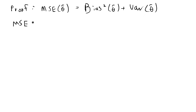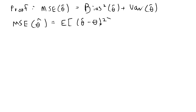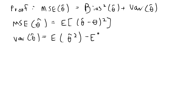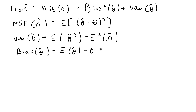Using expectation equations: the mean square error of an estimator theta hat is equal to the expected value of theta hat minus theta, squared. We can also define the variance of theta hat as the expected value of theta hat squared minus the expected value of theta hat, squared. And the bias of theta hat is equal to the expected value of theta hat minus theta.